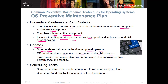Firmware updates can enable new features and improve hardware performance and stability. They don't come out often, but you want to check with the manufacturer, especially when supporting a server. For scheduling tasks, some preventative tasks can be configured to run at assigned times — such as backups. You can use the Windows Task Scheduler, the 'at' command, or third-party software to run backups or other preventative maintenance.